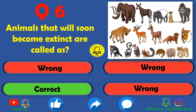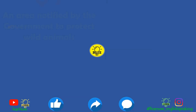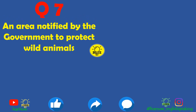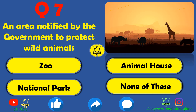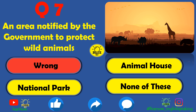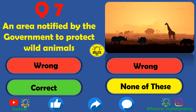Extinct animals are no longer found on earth. Next question: an area notified by the government to protect wild animals is called what? Zoo is wrong, animal house is also wrong. The correct answer is national park — a national park is a notified area designated by the government to protect wild animals.